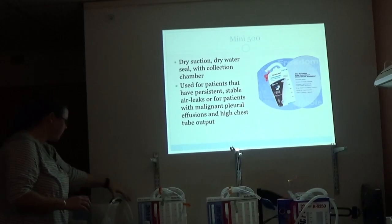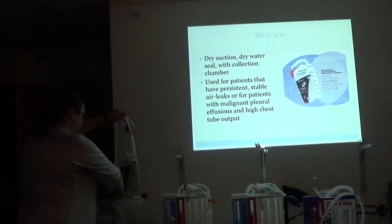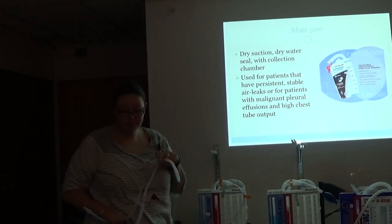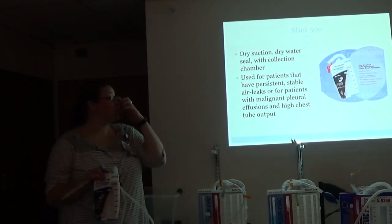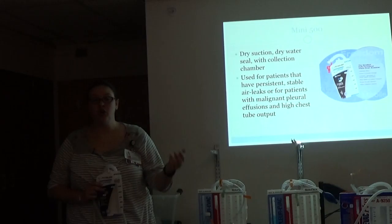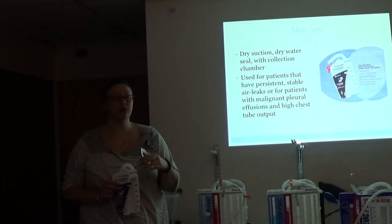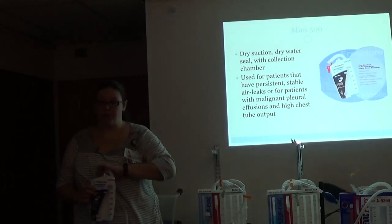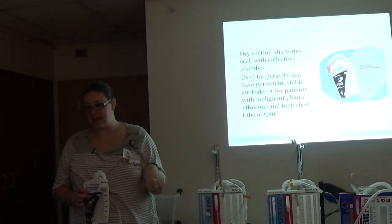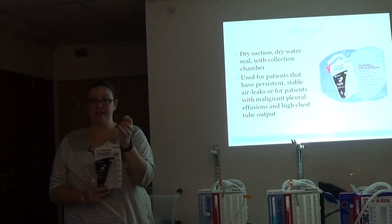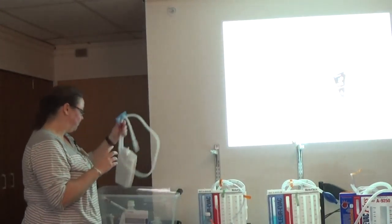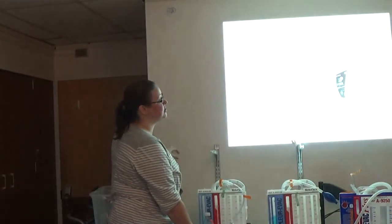The Mini-500 is also a great new invention. So patients who have air leaks, it used to be that you were in the hospital until your air leak resolved. We created this little ambulatory chest tube system. It hangs on a belt. It's a dry suction, dry water seal. So we use it with patients who have persistent, small to moderate, stable air leaks so that they can go home and heal in their own home. So they sleep in their own bed, they eat their own food. And we also use it for patients who have malignant pleural effusions with high chest tube output who don't tolerate intermittent thoracentesis. So they can just disconnect this, pour the contents into the toilet, reconnect it and undo their slide.